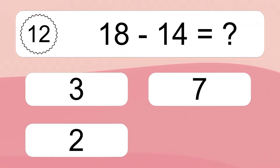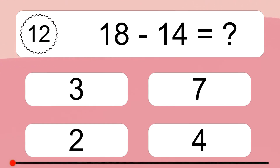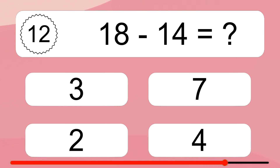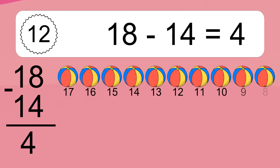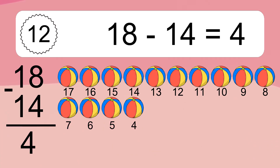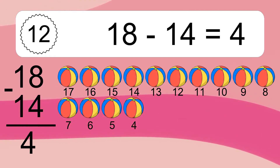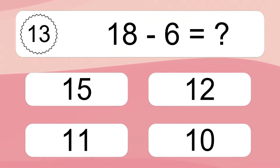18 minus 14 equals what? 18 minus 14 equals 4. Let's count it: 17, 16, 15, 14, 13, 12, 11, 10, 9, 8, 7, 6, 5, 4.